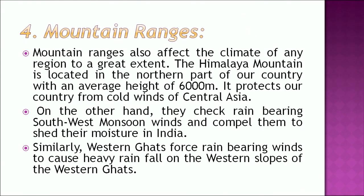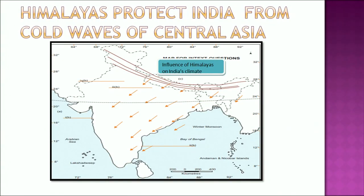Another factor which influences the climate is mountain ranges. The Himalaya mountain is located in the northern part of our country with an average height of 6,000 metres. It protects our country from the cold winds of central Asia. On the other hand, the rain-bearing southwest monsoon winds are compelled to shed their moisture in India. Similarly, the Western Ghats force rain-bearing winds to cause heavy rainfall on the western slopes. This map also shows the same.